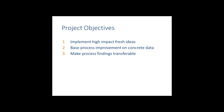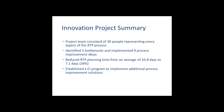The project objectives were: new high-impact fresh ideas to be implemented, use concrete data, and make them transferable to other healthcare institutions so they could use it as well. We had 30 people representing every aspect of the process — from booking clerks to physicians to nurses, everybody involved. The group identified five bottlenecks and implemented nine improvement ideas. Planning time was reduced 34%, to 7.1 days from 10.8, and a CI program was established to implement additional process improvement solutions.